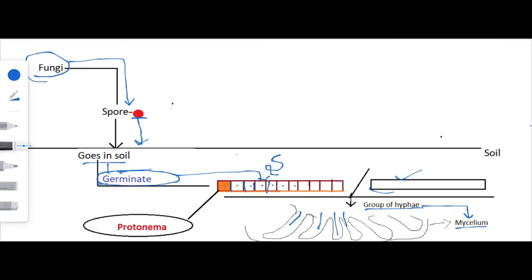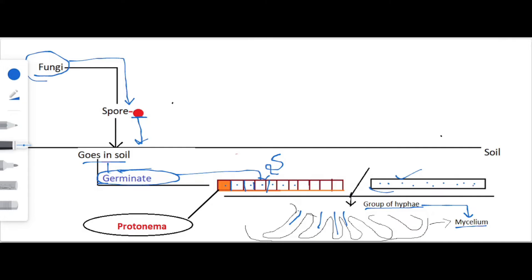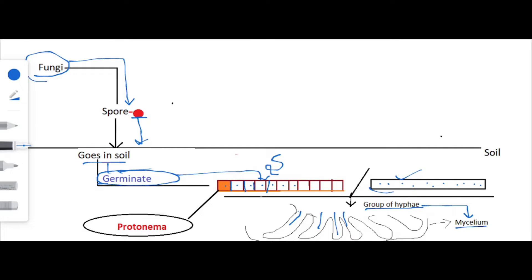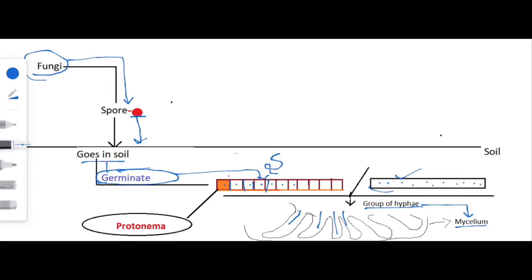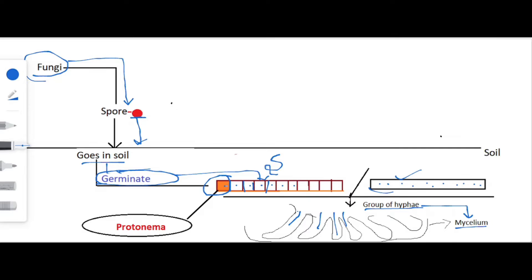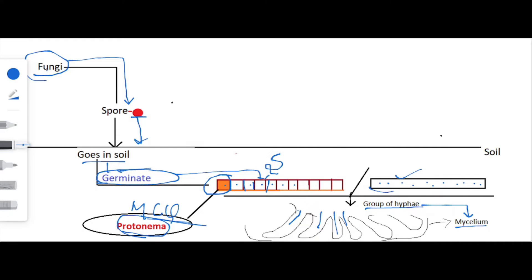The first spore from which the hyphae are going to grow is known as protonema — this is an MCQ. To recap: fungi reproduce and produce a spore; the spore goes into the soil; it germinates into hyphae; the hyphae are of two types — septate and aseptate.